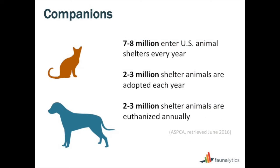Let's focus on the sheltering community. This is information from the ASPCA, which tracks this information pretty closely. About 7 to 8 million companion animals enter U.S. animal shelters every year, and our sheltering system is set up mostly for dogs and cats. Of those, 2 to 3 million are adopted each year, and unfortunately 2 to 3 million are still euthanized each year. There's also a huge disparity in return-to-owner rates: about 25-26% of dogs are returned to their guardians, but only 5% of cats are ever reunited with their people.